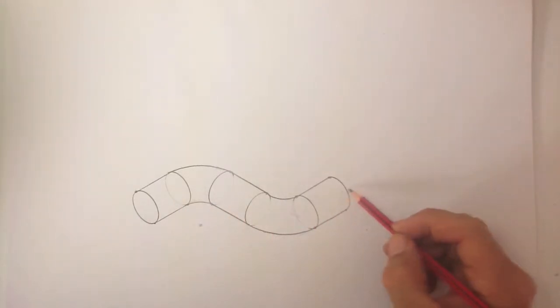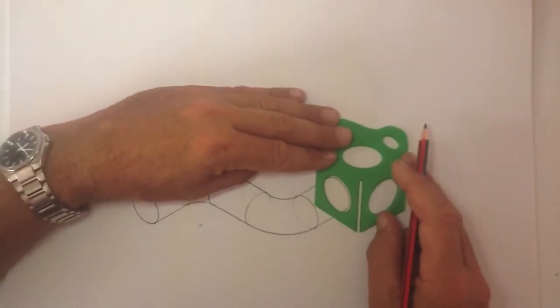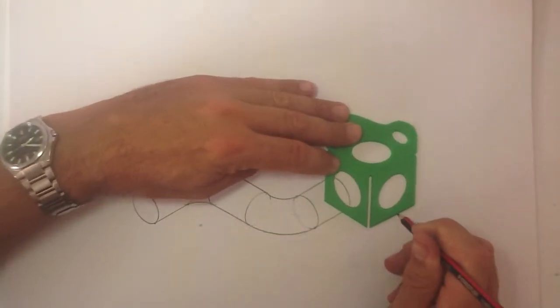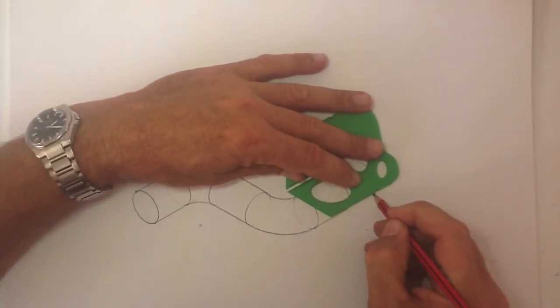If I wanted to make this cylinder look even longer, I would just replace that there. Slide out there. Draw. And connect again.